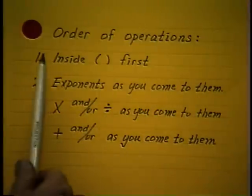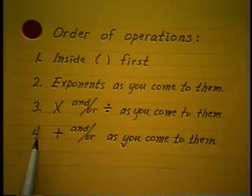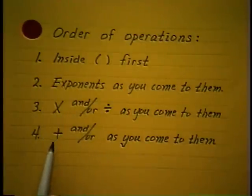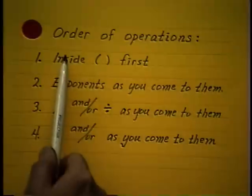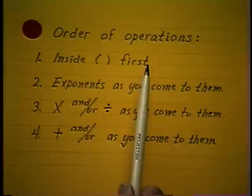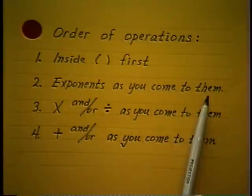So these are the order of doing operations in all of your future mathematical work. This is the order that computers evaluate arithmetic expressions. It is also the order in which calculators with algebraic logic — scientific calculators — will work. So first you do what's inside parentheses. Once you're there, you do the exponents first as you come to them.